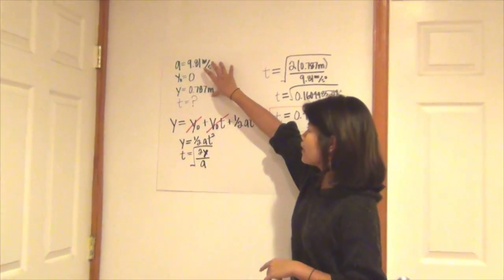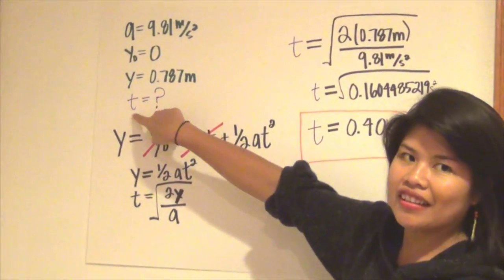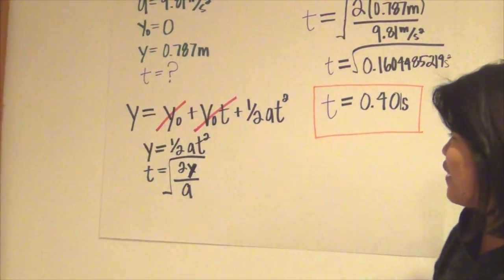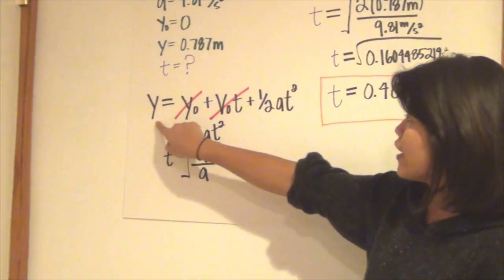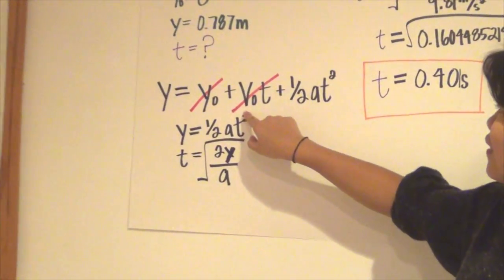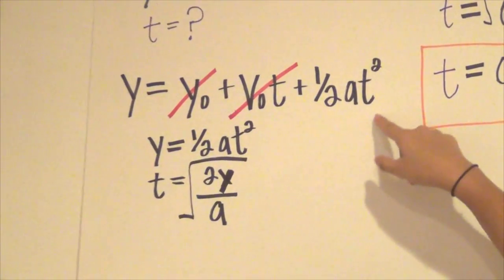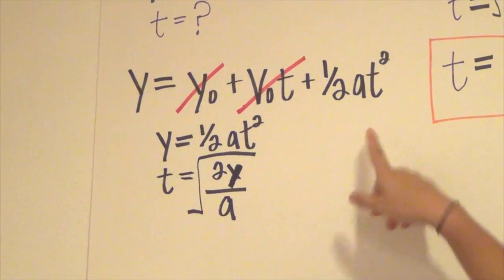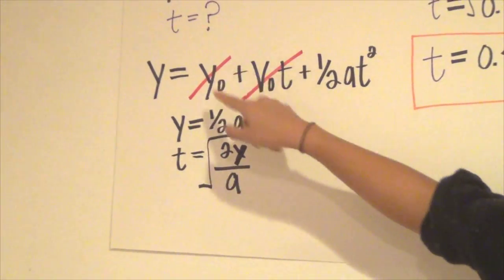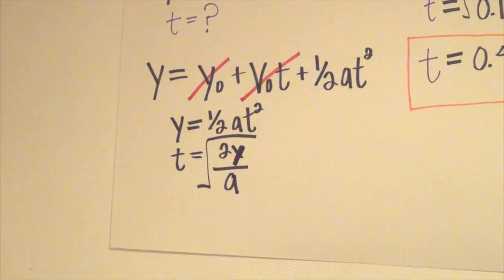Okay, so with our y components we're going to plug it in and figure out t for the time. We're going to use this formula: y equals y naught plus v naught t plus one half a t squared.